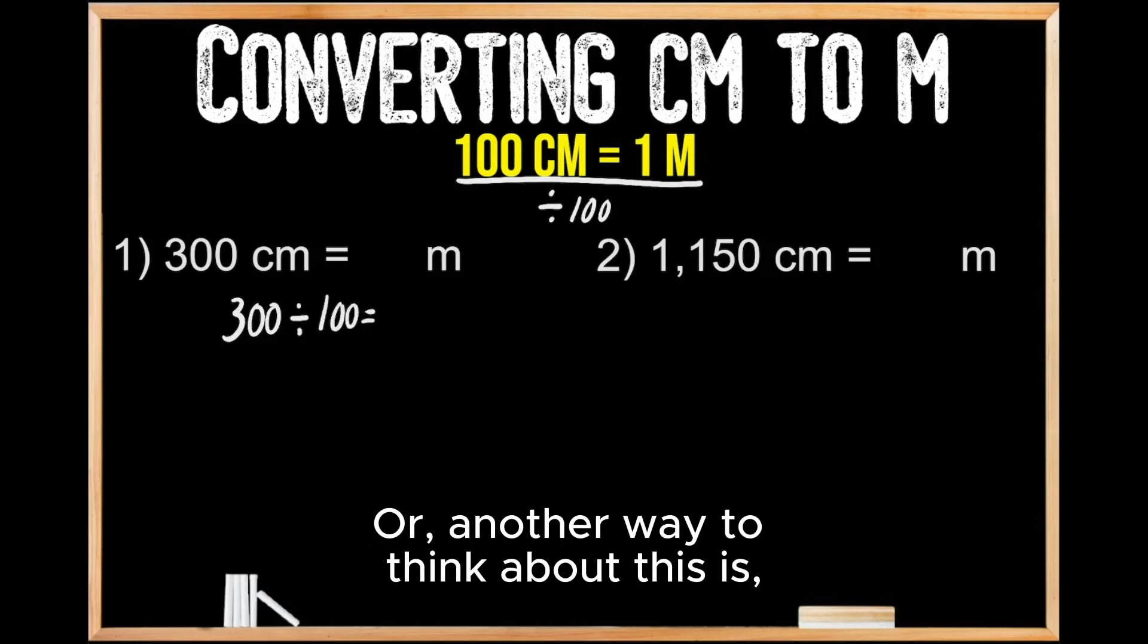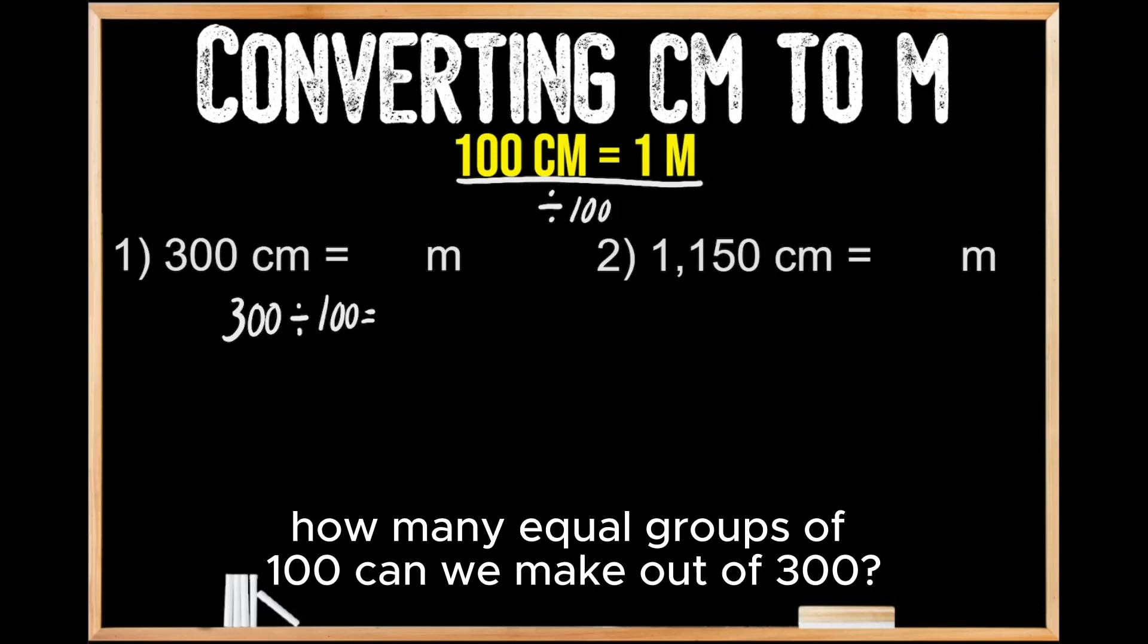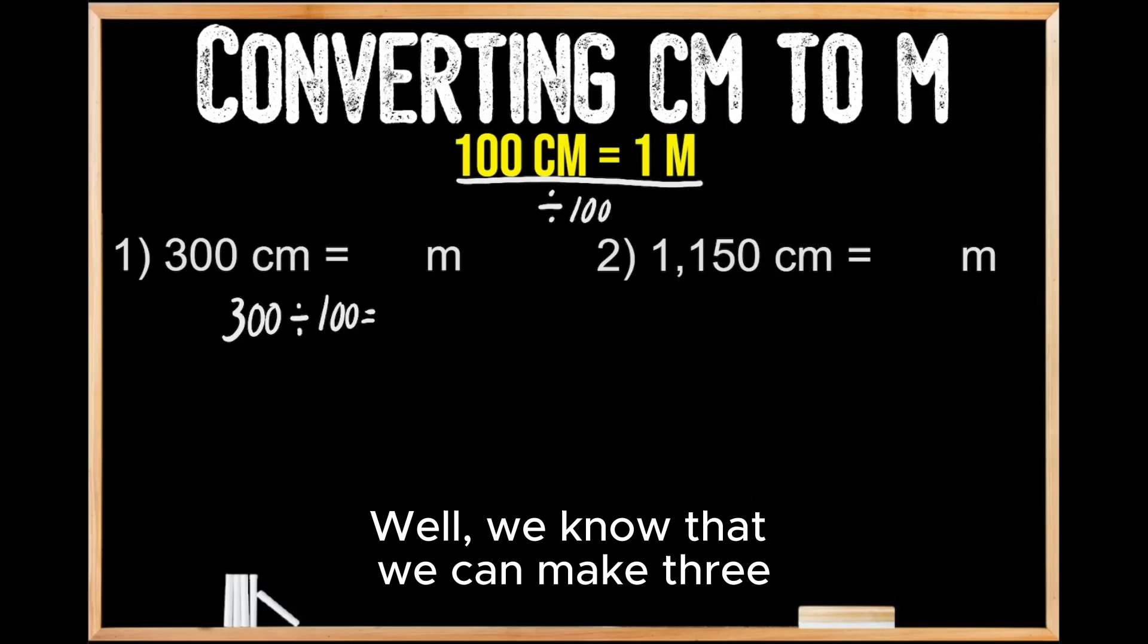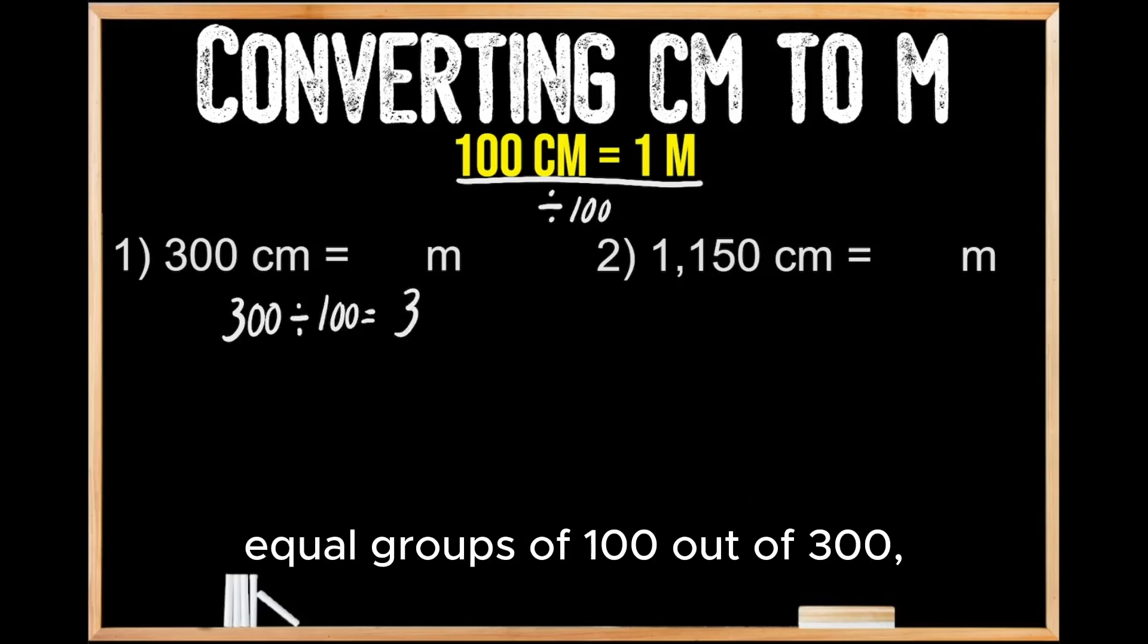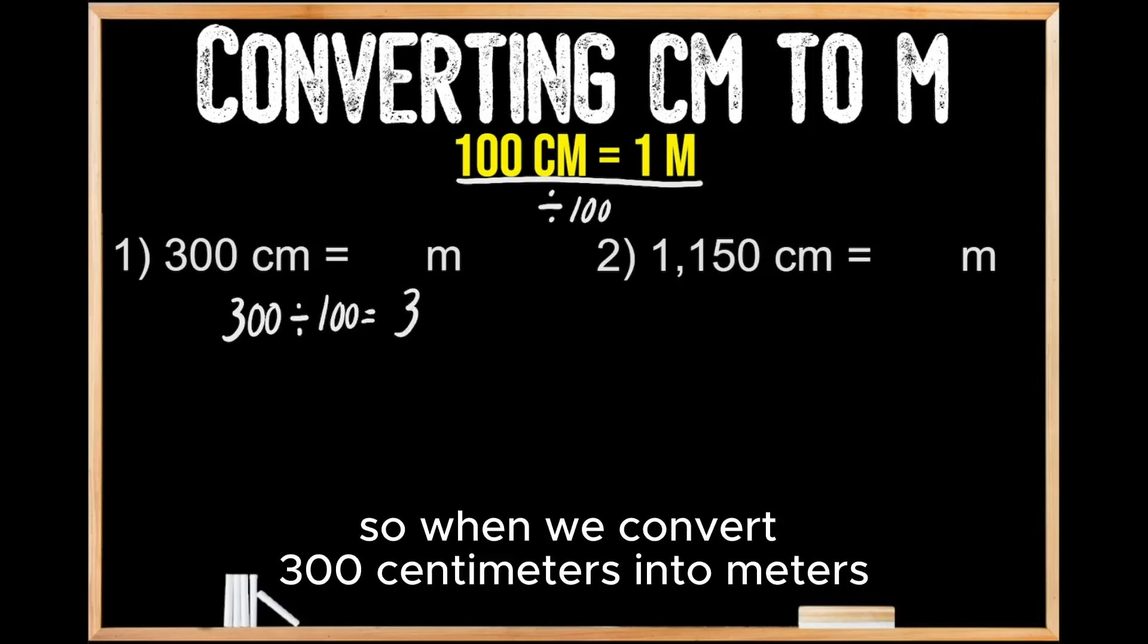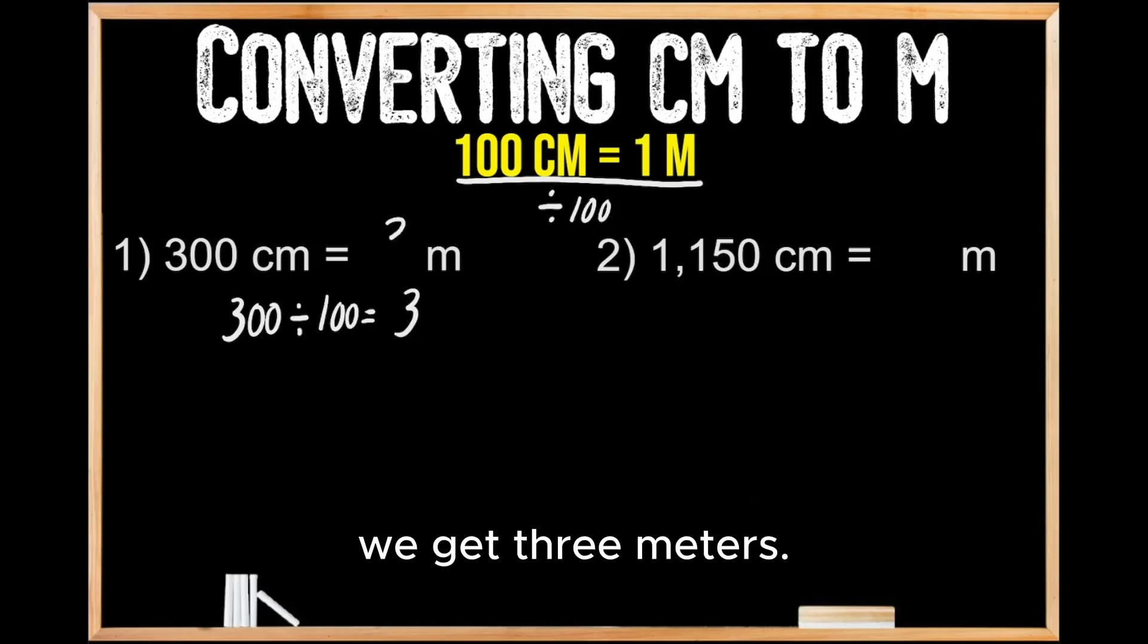Or another way to think about this is, how many equal groups of 100 can we make out of 300? Well, we know that we can make three equal groups of 100 out of 300. So when we convert 300 centimeters into meters, we get three meters.